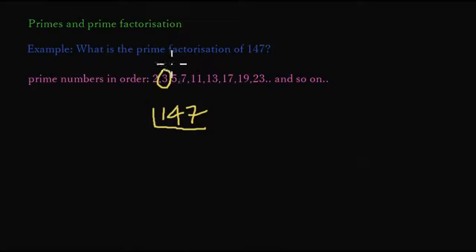And yes, 147 gives a whole number when divided by 3. Therefore we write a 3 here to indicate that 147 can be divided by 3 to give 49.